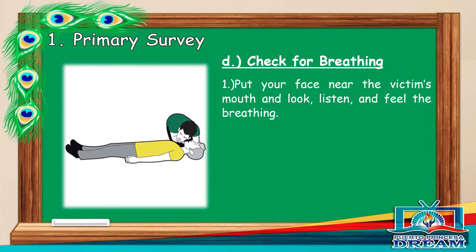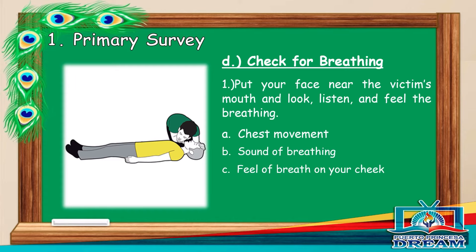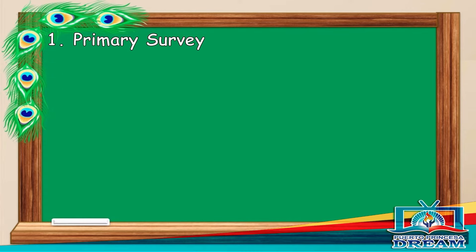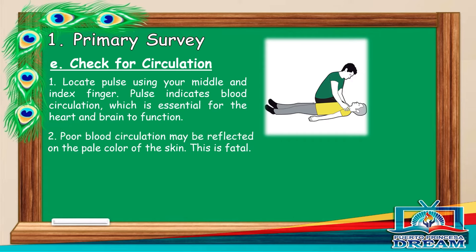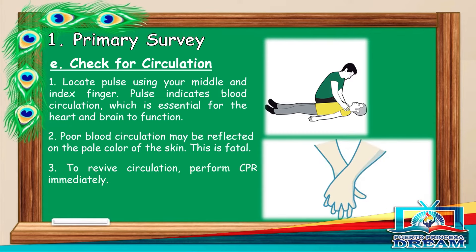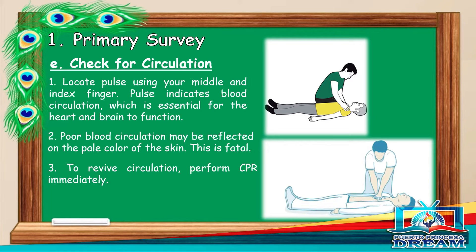Check for breathing. Put your face near the victim's mouth and look, listen, and feel the breathing — check for chest movements, sound of breathing, and feel of breath on your cheek. Check for circulation. Locate pulse using your middle and index finger. Pulse indicates blood circulation which is essential for the heart and brain to function. Poor blood circulation may be reflected on the pale color of the skin. This is fatal. To revive circulation, perform CPR immediately.